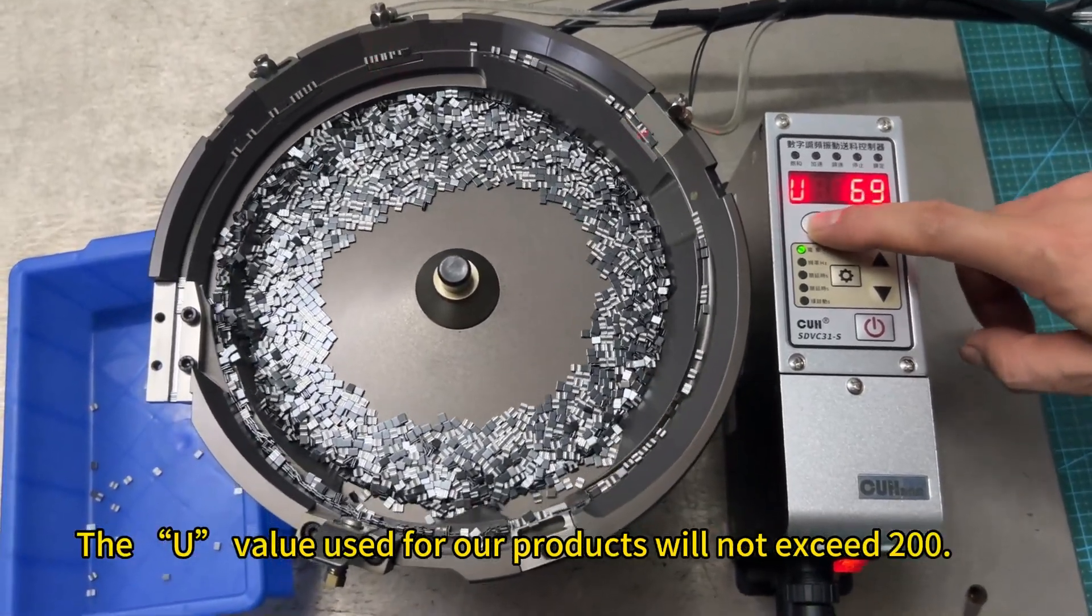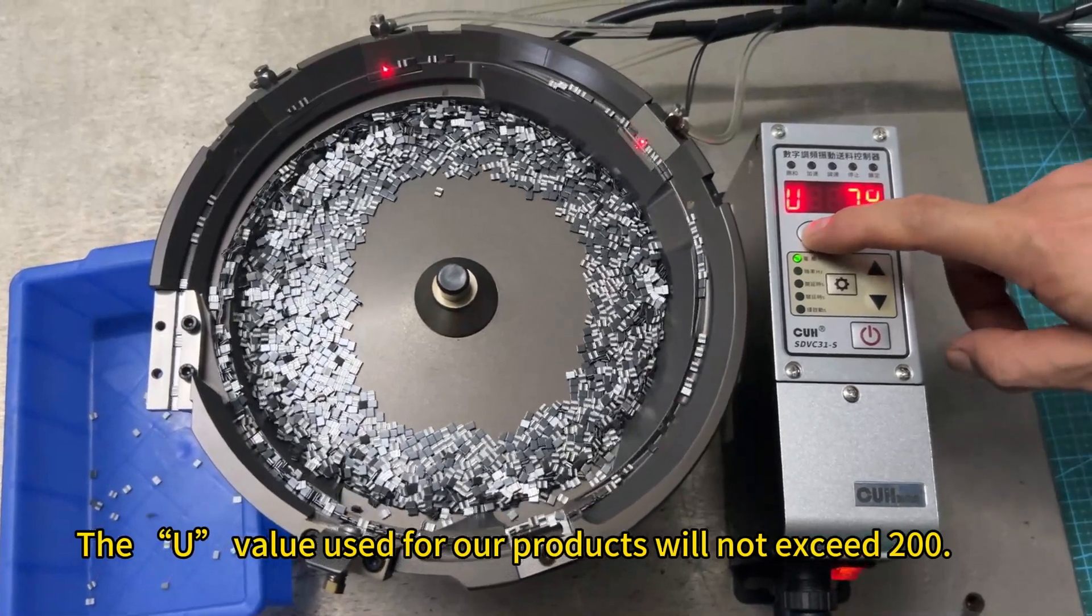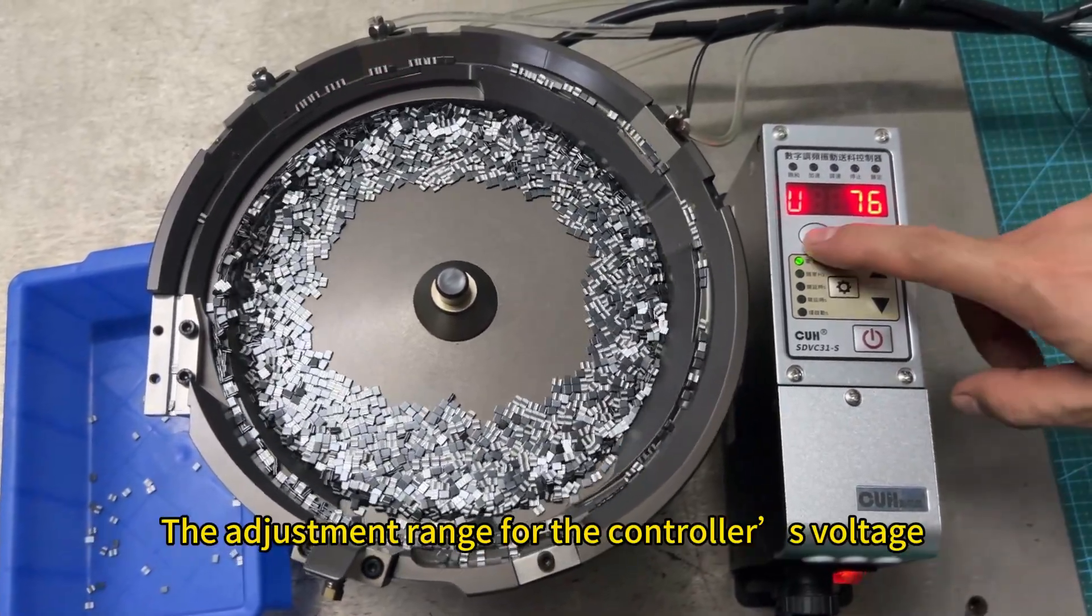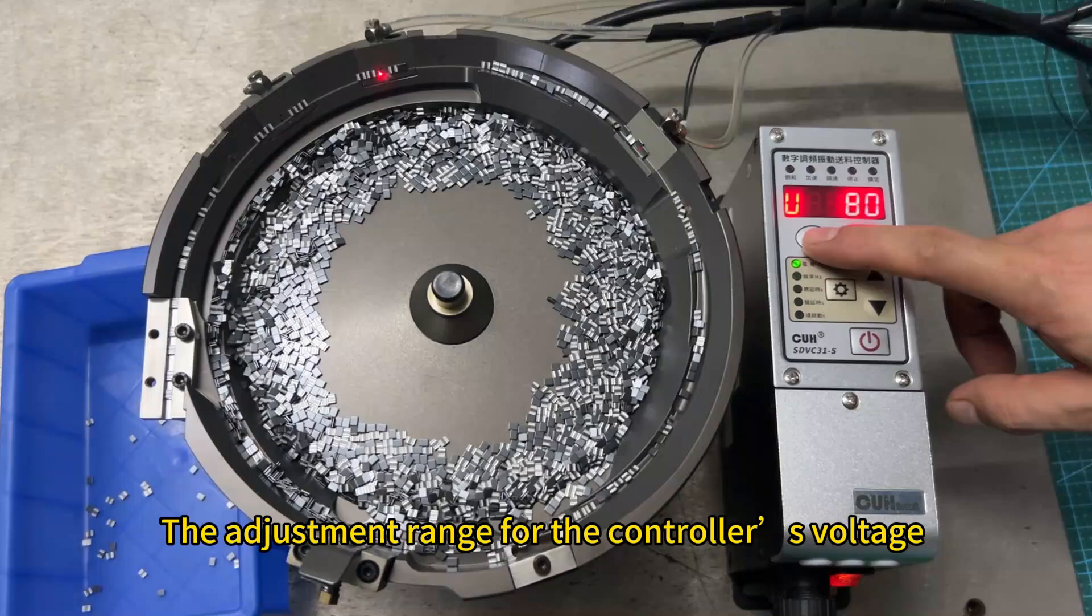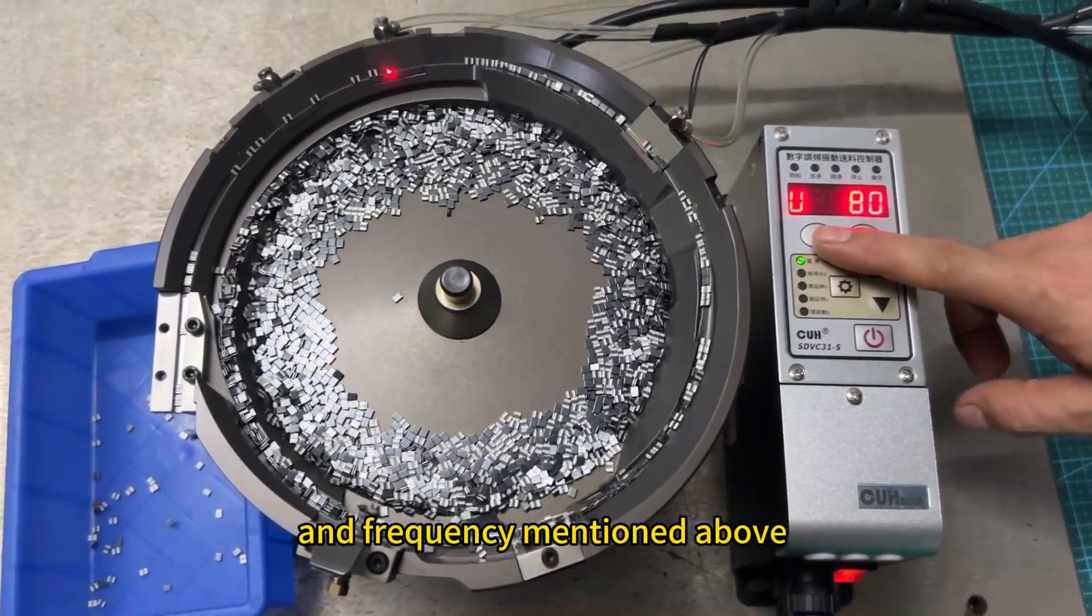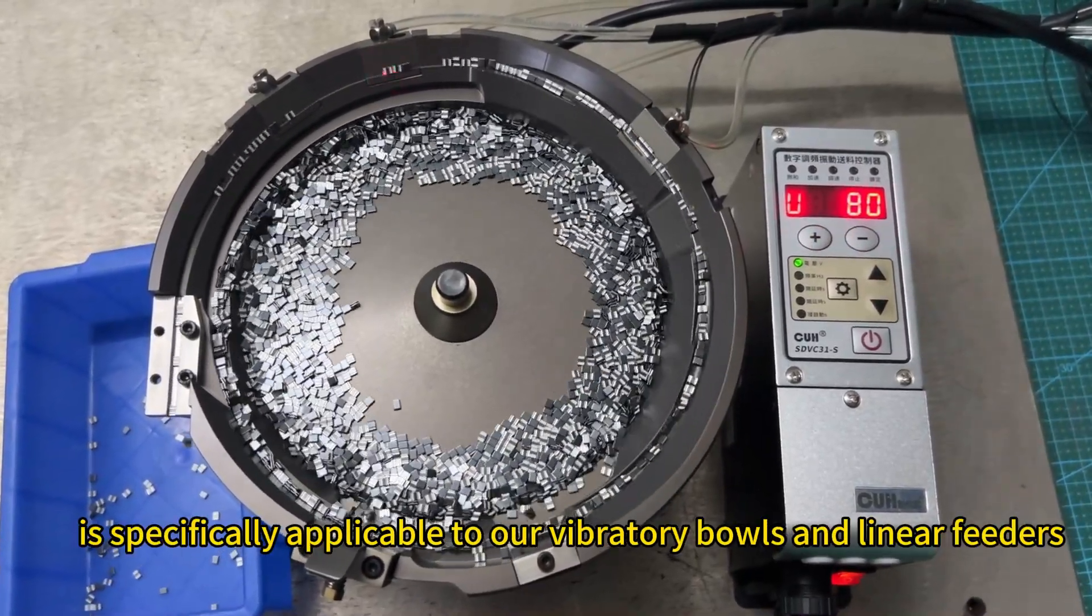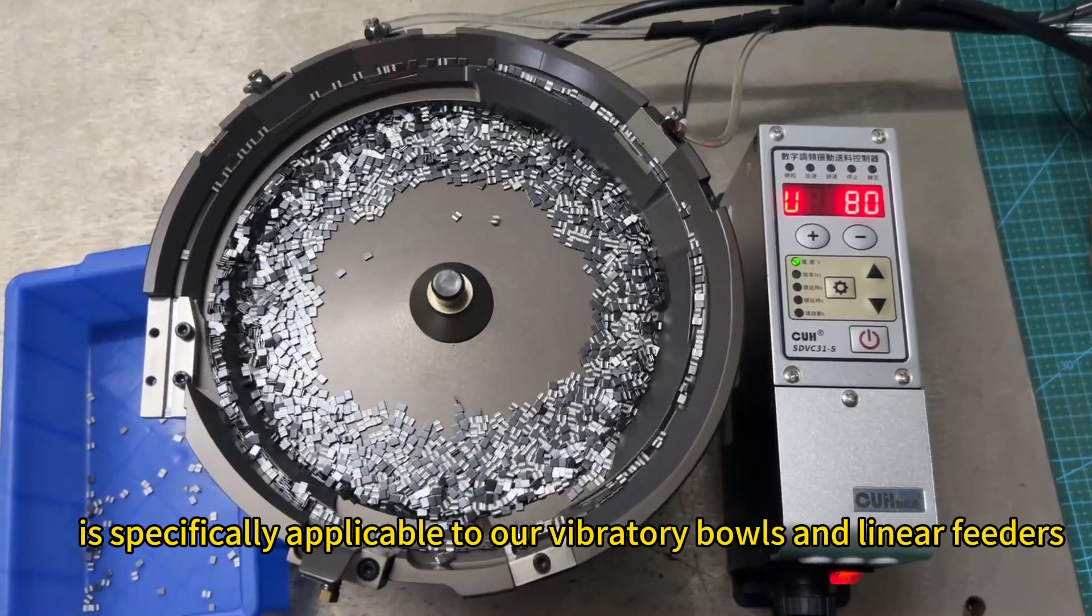The U value used for our products will not exceed 200. The adjustment range for the controller's voltage and frequency mentioned above is specifically applicable to our vibratory bowls and linear feeders.